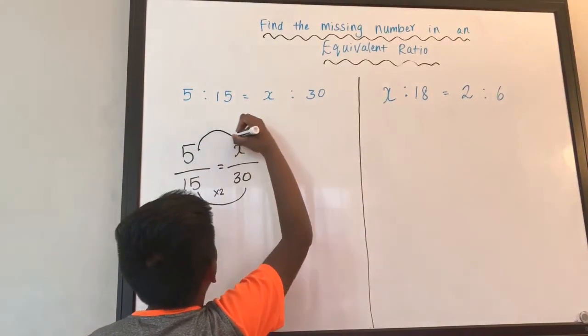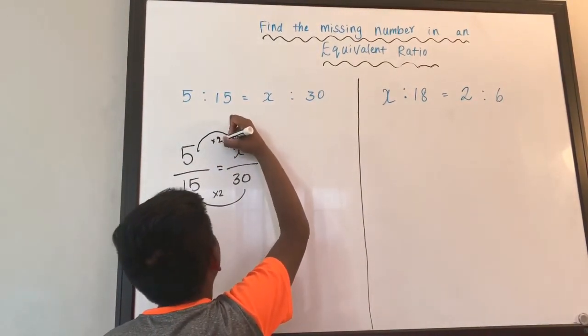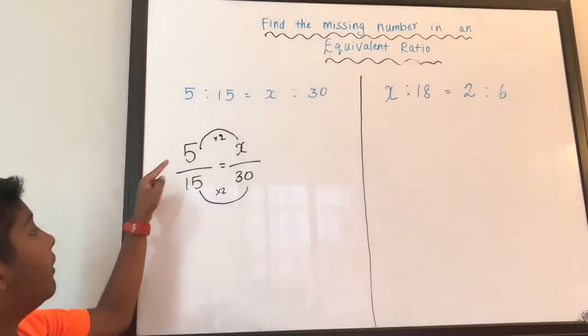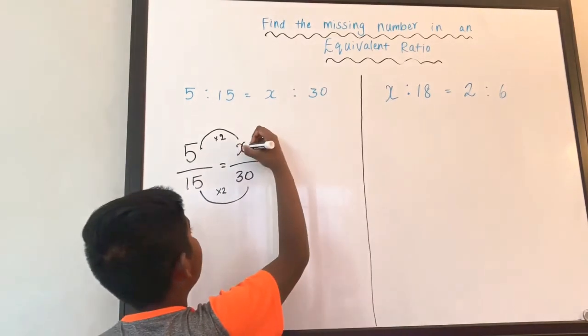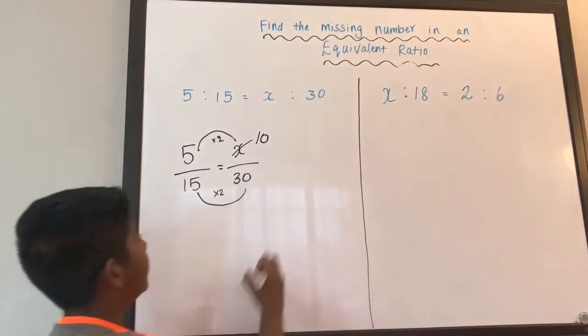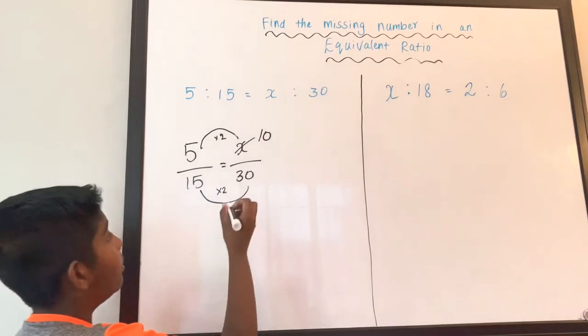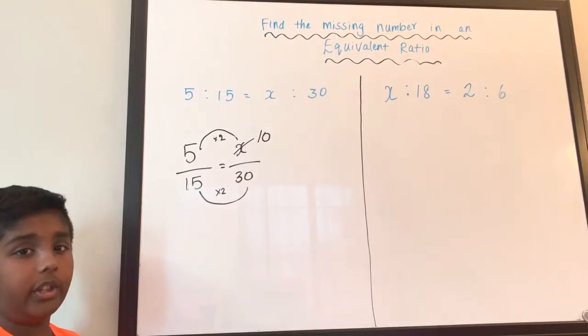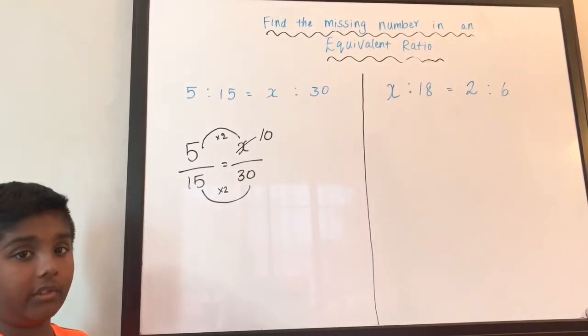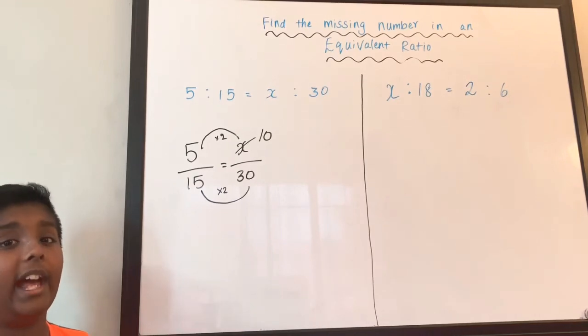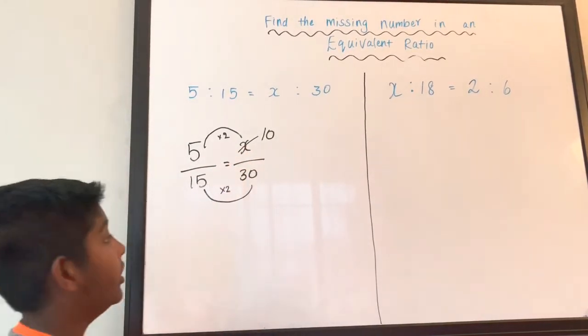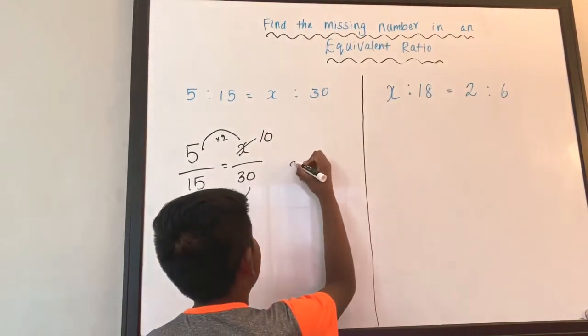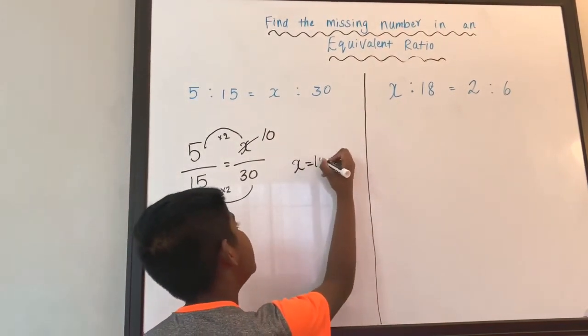It's gonna be times 2. So 5 times 2 is 10. So this one is going to turn into 10. So remember I told you in the beginning of this question, we have to find out the X value. And we did. It is 10. So our answer is X equals to 10.